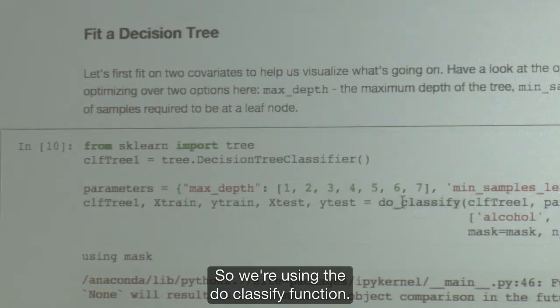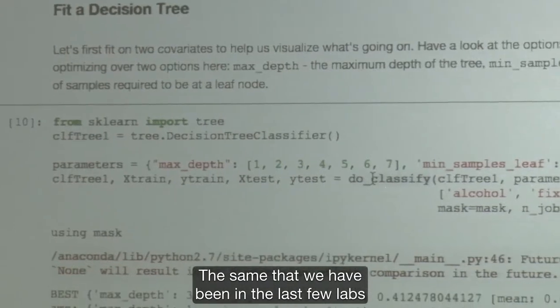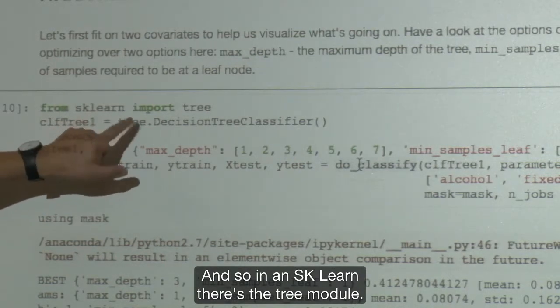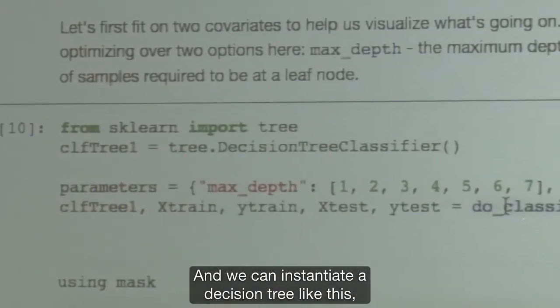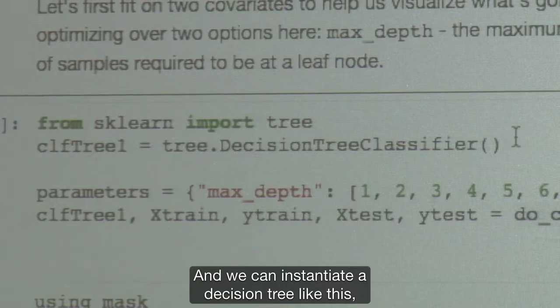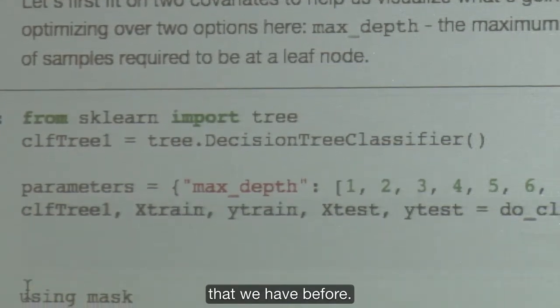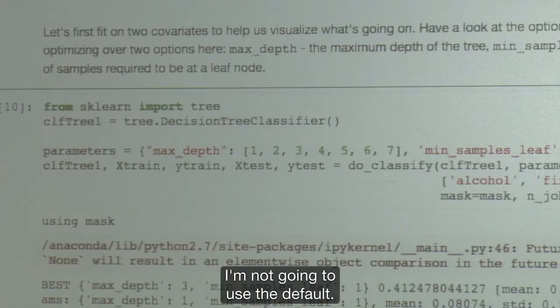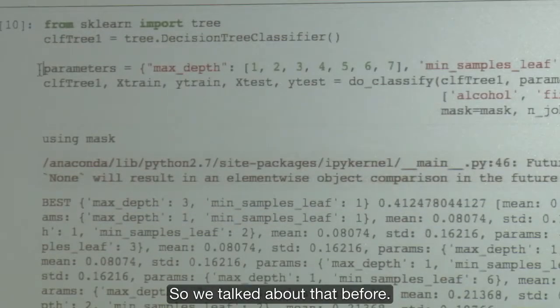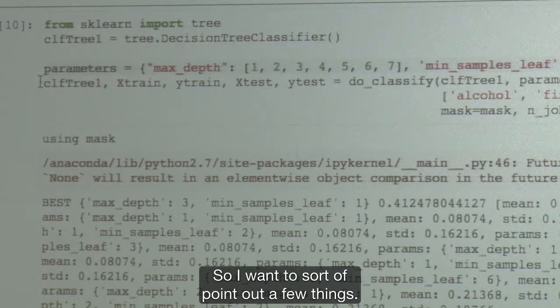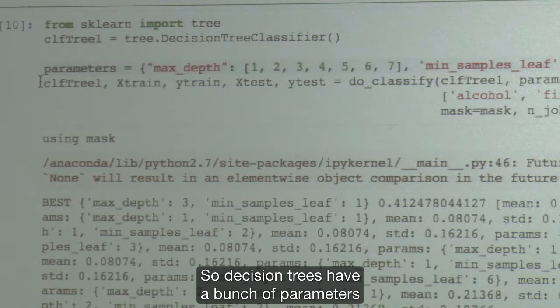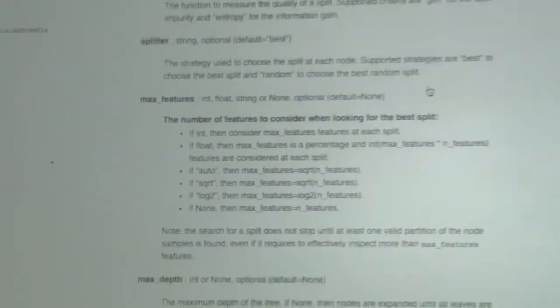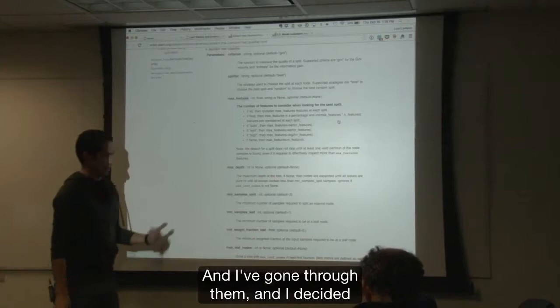So we're using the do classify function, the same that we have been done in the last few labs on machine learning. And so in sklearn there's a tree module, and we can instantiate a decision tree like this. And then we basically pass it the exact same way that we have before. Except here, notice that when it asks for the score function, I'm actually going to give it a new score function. I'm not going to use the default. The default is accuracy. So decision trees have a bunch of parameters that you can tune.